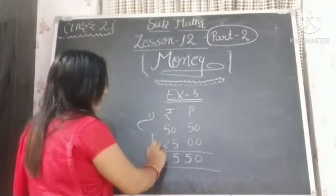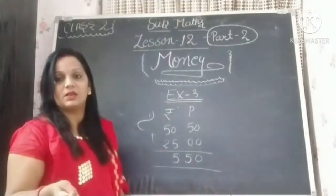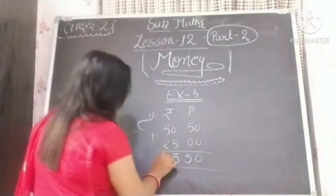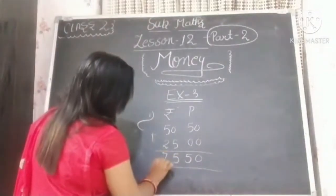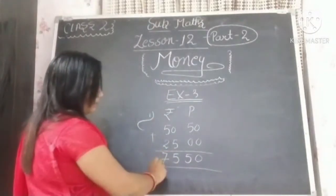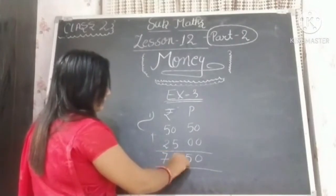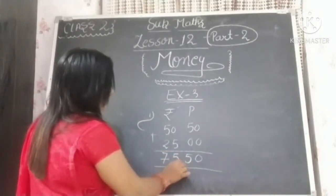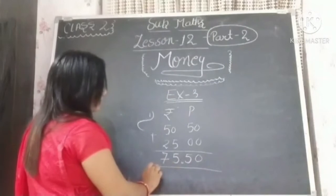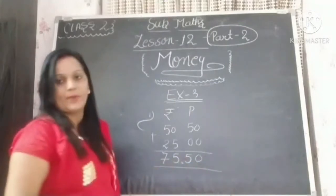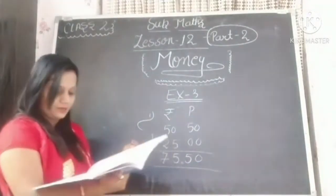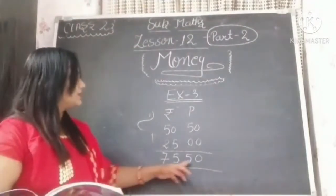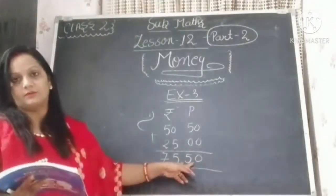Then we add: 5 and 2 — as you can count down, 5 and 2 gives 7. After writing the two numbers, we mention the two parts — rupees and paisa. So we have our answer: 75 rupees, 50 paisa.